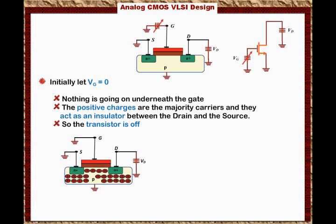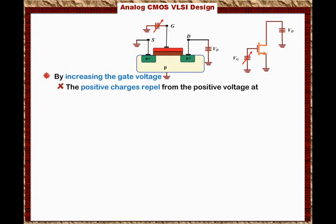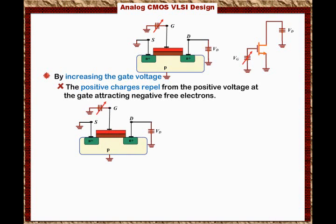When the voltage at the gate is 0, the drain and source are insulated, meaning no current flows through the transistor. By increasing the gate voltage, the positive voltage will attract negative charges and repel positive charges. The positive charges are repelled from the gate and free electrons are attracted, and you start to see free electrons attracted underneath the gate. As the gate voltage becomes more positive, the gate attracts more electrons.